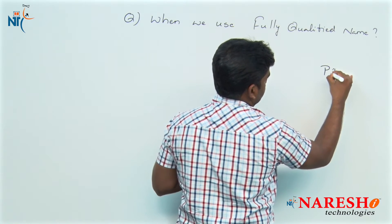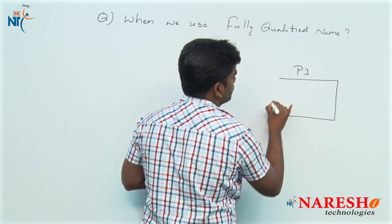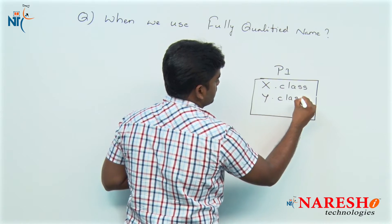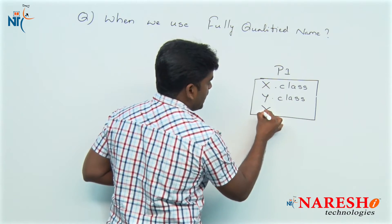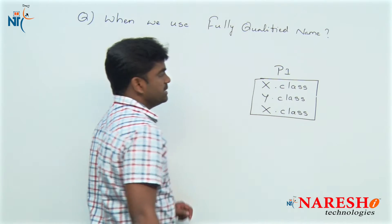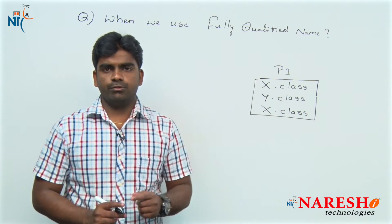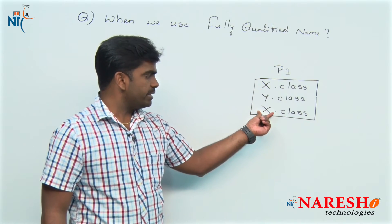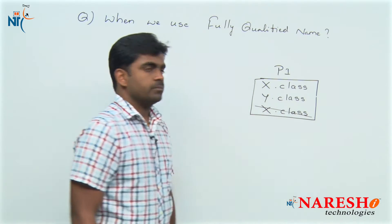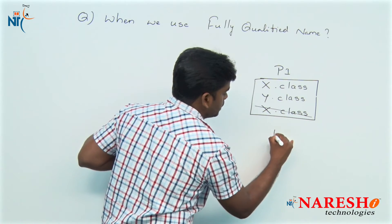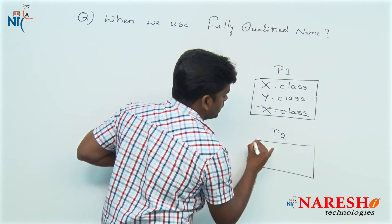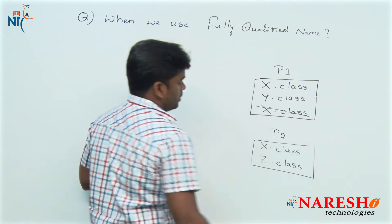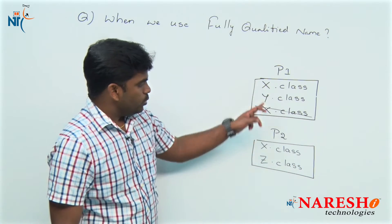Take one package p1. In package p1, already one class X is there and one more class Y is there. Can I place another X class file? A package is nothing but a folder — in a single folder on your computer, if one file with a given name already exists, you cannot place another file with the same name. It is not allowed. So you have to create another folder with a different name, and in that folder you can place X.class and other classes like Z.class. The main advantage of packages is avoiding collisions between class names.